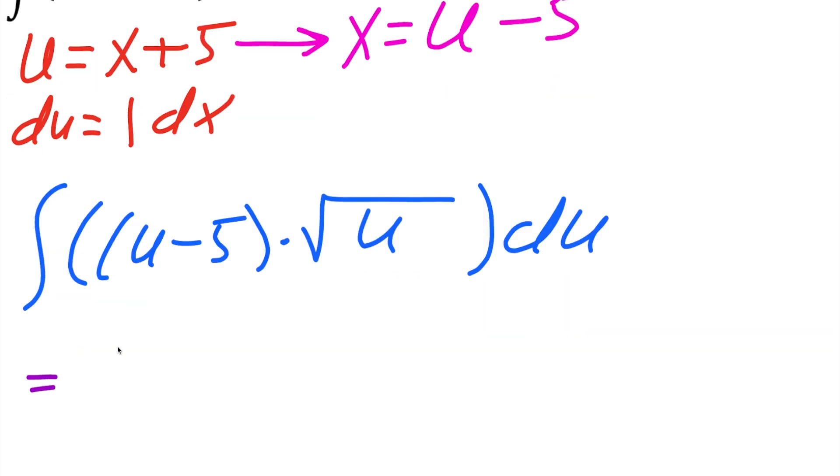And now we can expand it. So we'll have the integral u times the square root of u would give us u raised to 3 divided by 2 minus 5u raised to 1 half.